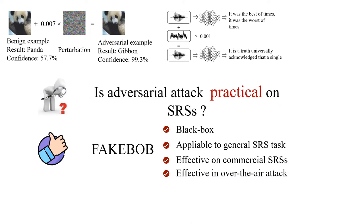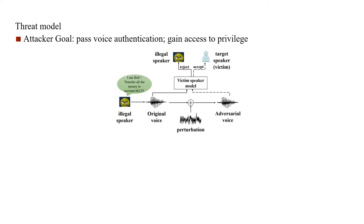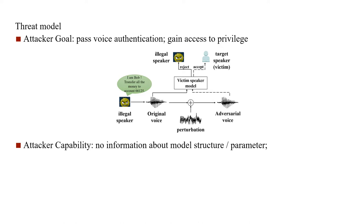We answer this question by proposing an attack called Feibok. Feibok is black-box, it can be applied to general speaker recognition tasks, it remains effective on commercial speaker recognition systems, and it is effective in over-the-air attack. In our threat model, a piece of voice from an illegal speaker will be rejected by the victim speaker model. The attacker adds perturbation to the original voice to compute an adversarial voice, which can successfully pass the voice authentication of the victim speaker model — that is, being accepted by this model — so the attacker can gain access to the privileges of the victim. The attacker has no information about the model's internal structure or parameters and is limited to querying the victim speaker model.